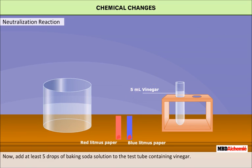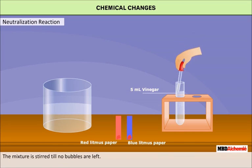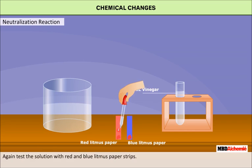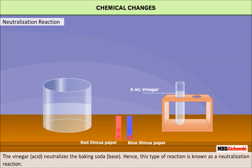Now add at least five drops of baking soda solution to the test tube containing vinegar. Bubbles are seen to have formed due to evolution of carbon dioxide. Stir the mixture until the bubbles stop, then test the solution with red and blue litmus paper strips. Since vinegar is acidic it turns blue litmus red, but when baking soda is added the new solution does not affect any litmus paper because it has become neutral. The vinegar acid neutralizes the baking soda base, hence this type of reaction is known as a neutralization reaction.